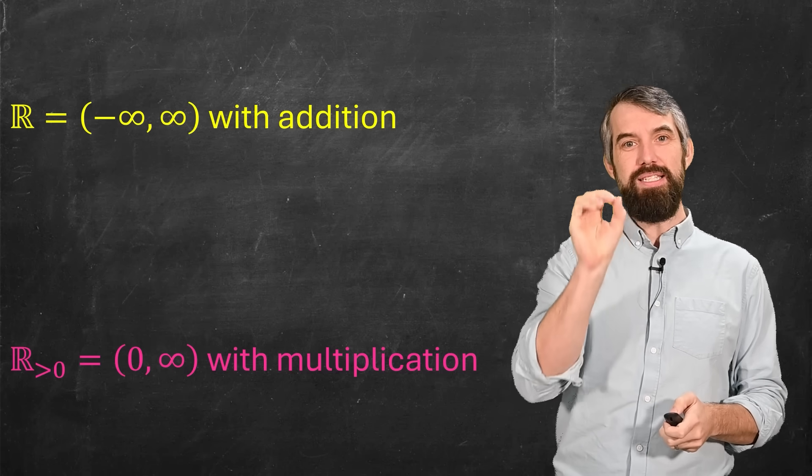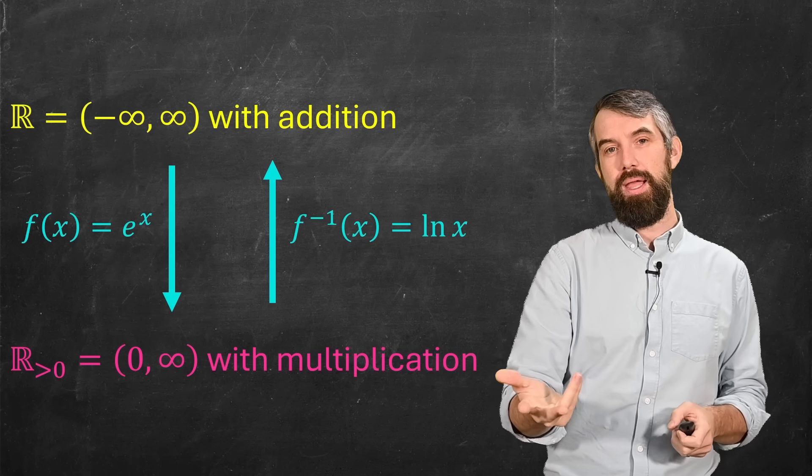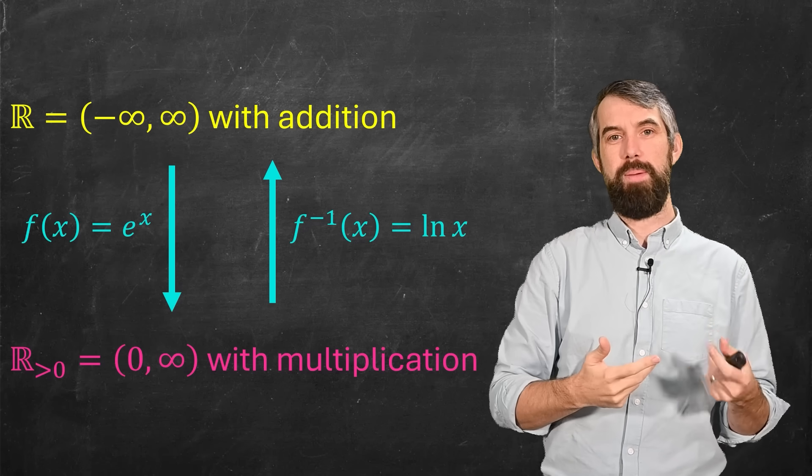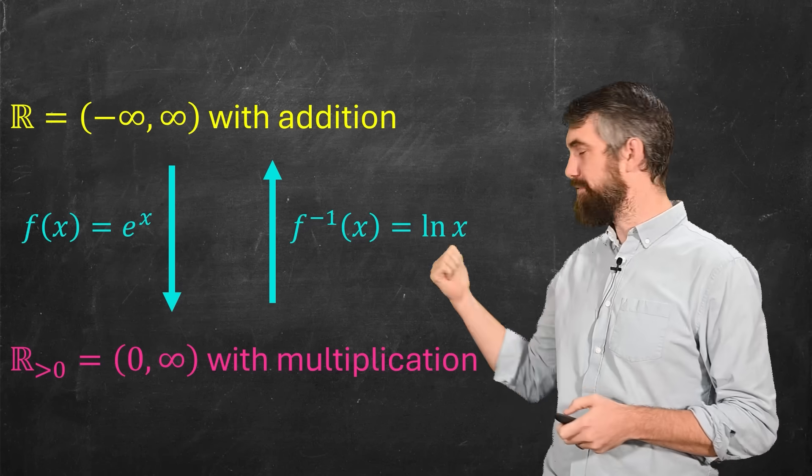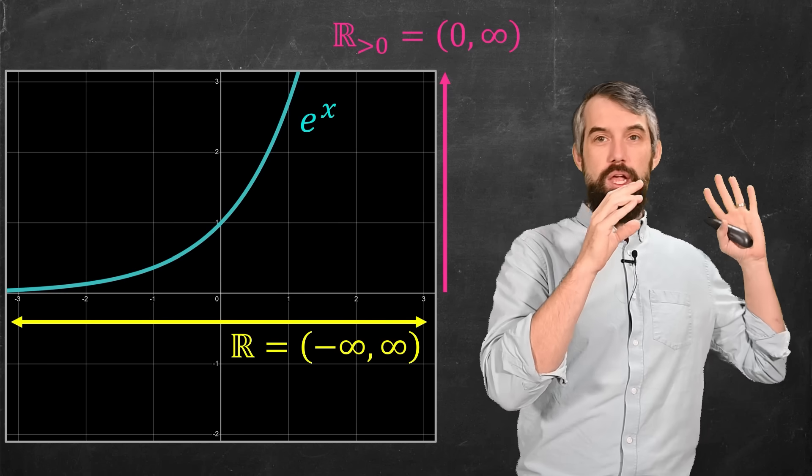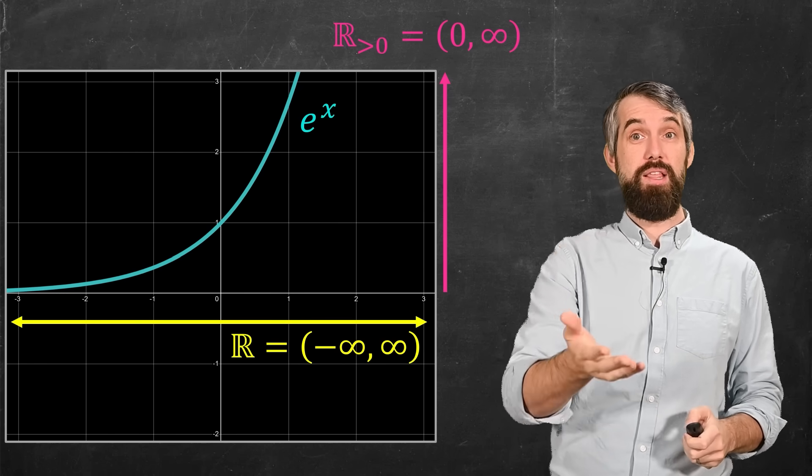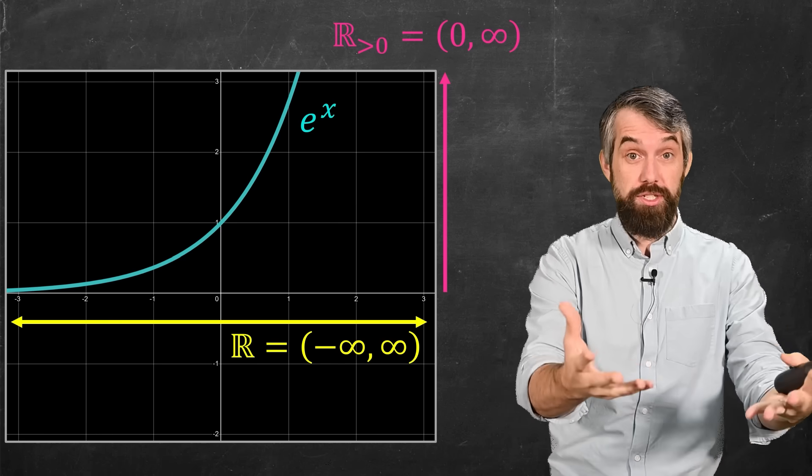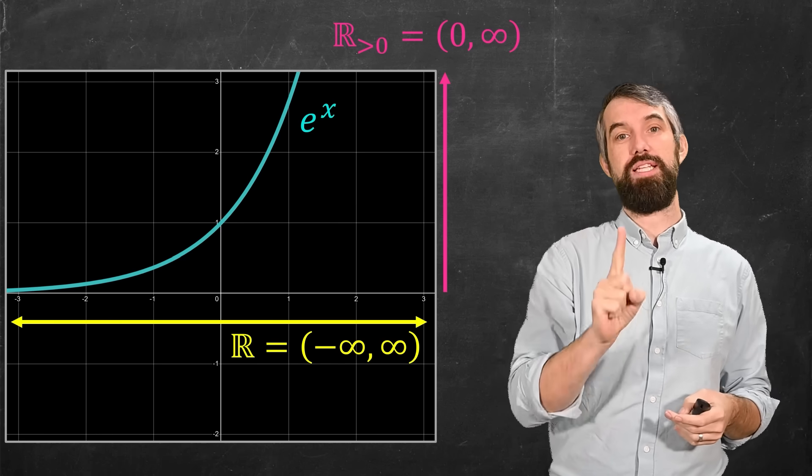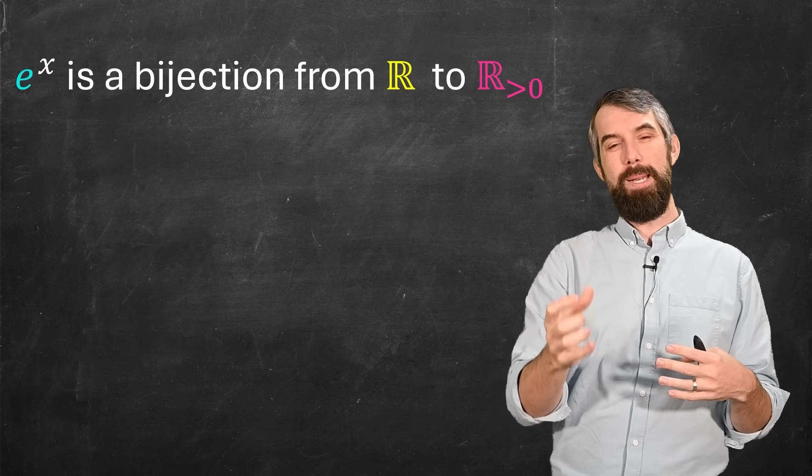But there is this function e to the x and its inverse called logarithm. And these functions somehow translate back and forth between them. I mean, the first thing to note is that e to the x, what does it do? Its inputs are all real numbers, its outputs are the positive reals, so e to the x goes from one set to the other. But it doesn't just go there. You can check that e to the x is actually a bijection. It's onto, so it hits everything in the positive reals. And it hits everything in the positive reals only once. It's a bijection. So that would be our level three notion of equivalence. But it's more than that.